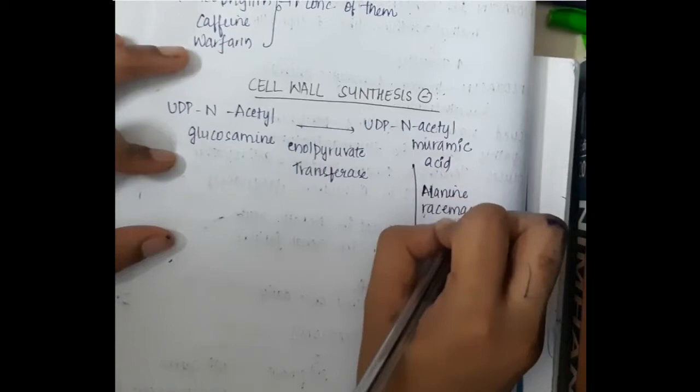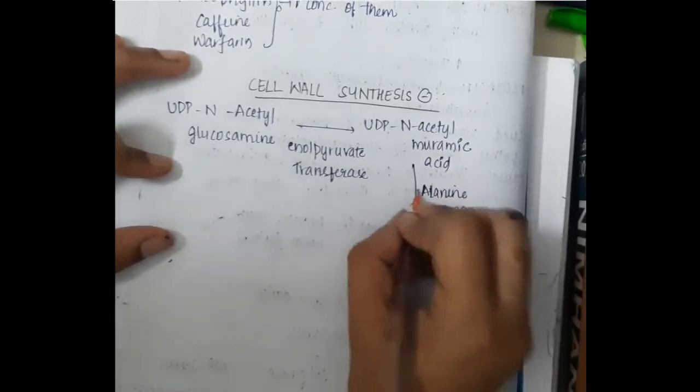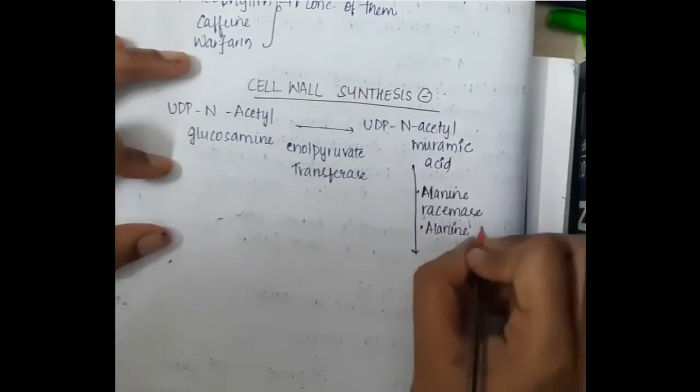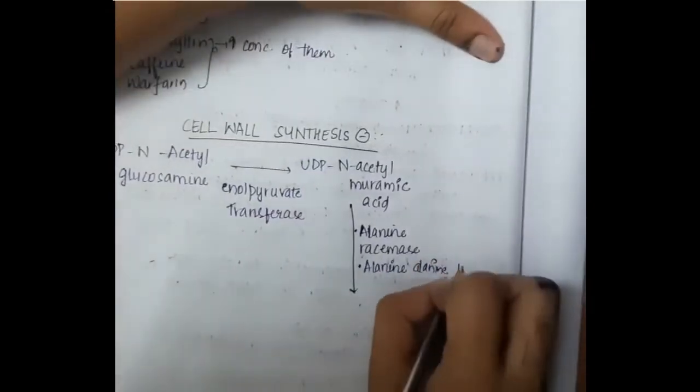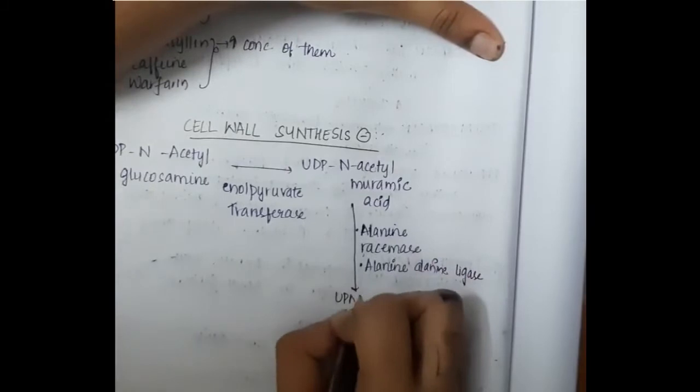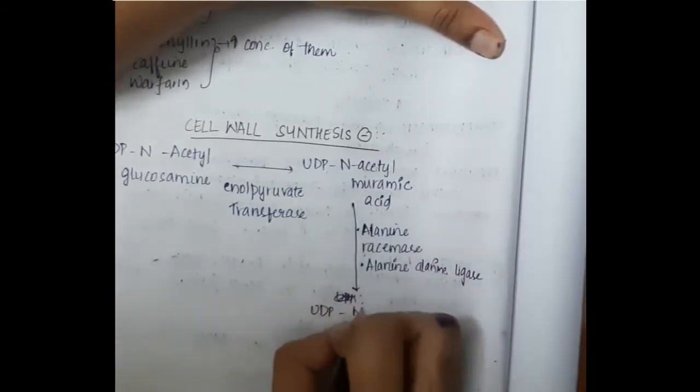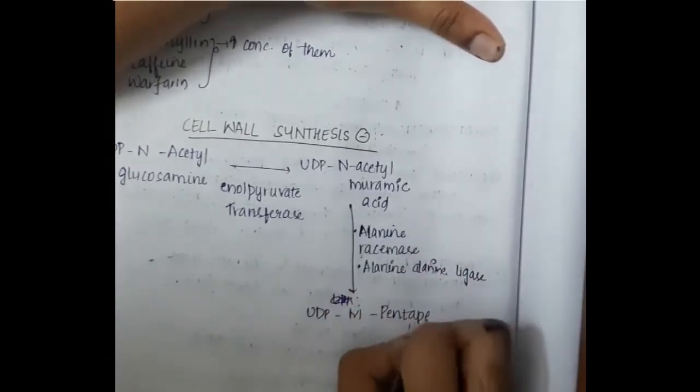This UDP-N-acetylmuramic acid in the presence of alanine racemase or alanine-alanine ligase gets converted to UDP-M-pentapeptide.